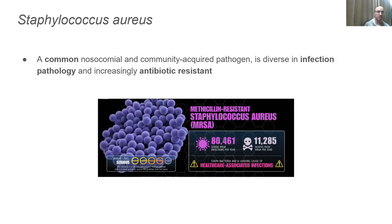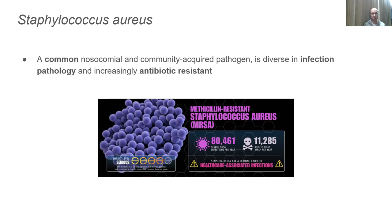Staphylococcus aureus was first discovered in the early 1880s by Friedrich Julius Rosenbach and Alexander Augustin, who noted that these bacteria grew as golden colonies, or aureus, in bunches of grapes under microscope slides, or Staphylococci. This gram-positive pathogen is incredibly common, present on between a third and two-thirds of people depending on the carriage time examined. It's both hospital and community acquired.